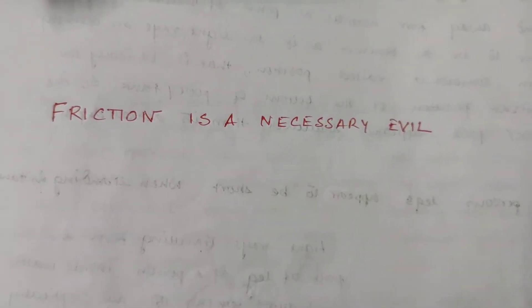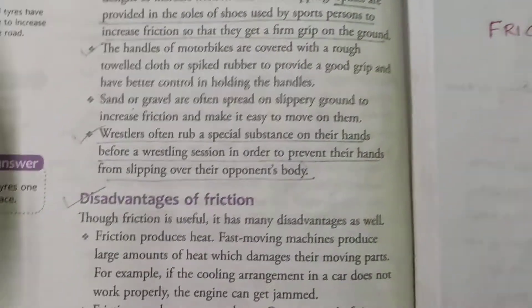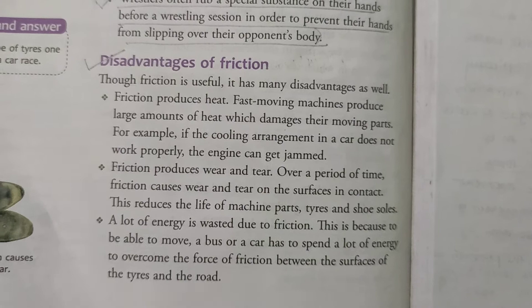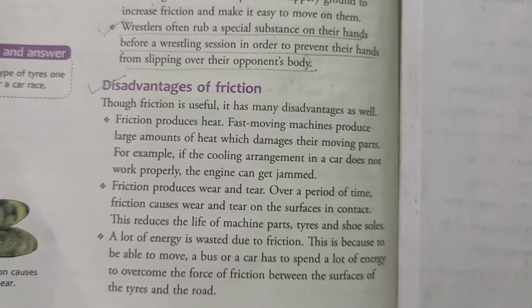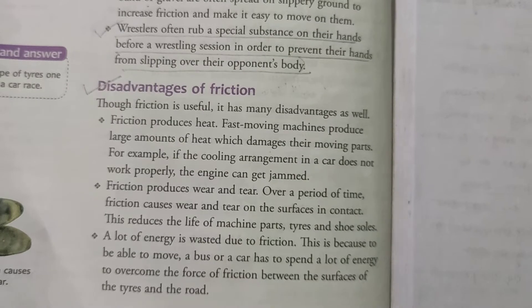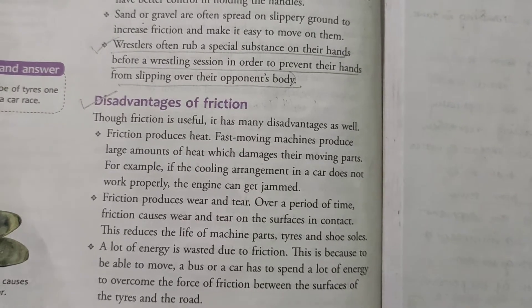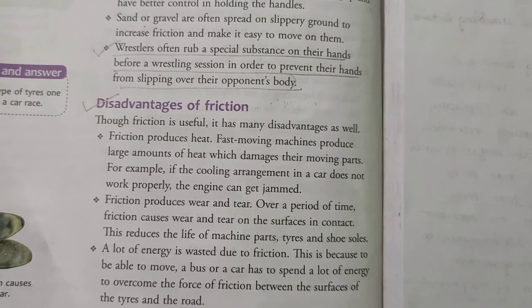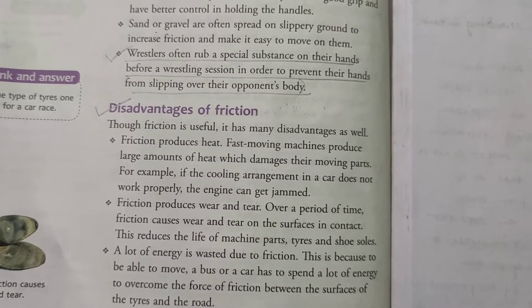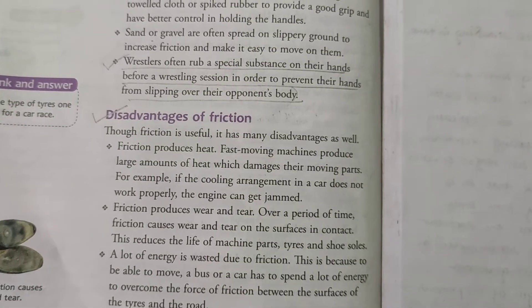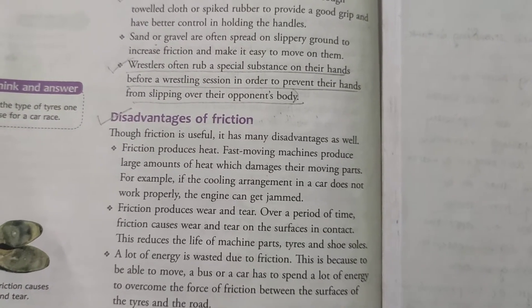We will start with why we call friction evil — what are the disadvantages of friction. First, friction produces heat. When we feel very cold, we rub our hands together. Why do we do so? Because by rubbing our hands, we can actually feel some heat. That is because when we rub our hands, frictional force is taking place — friction is produced when one hand moves over another hand.